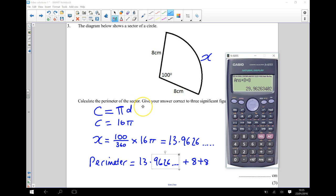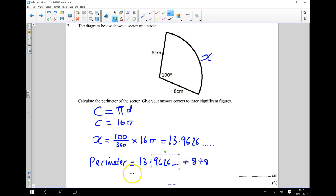Now, to three significant figures, I've got 29. I'll write it all down, and then we'll round it together. So I've got 29.9626, et cetera.